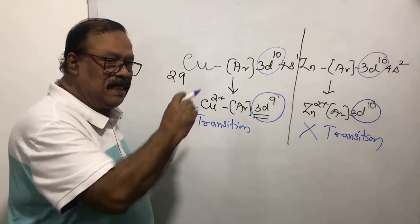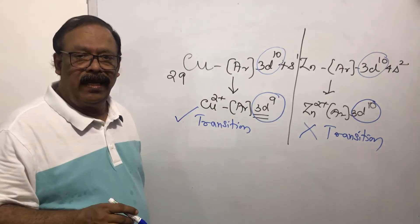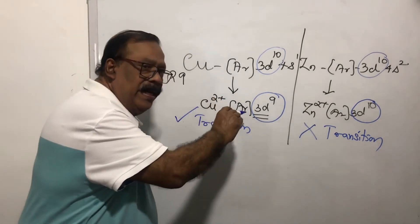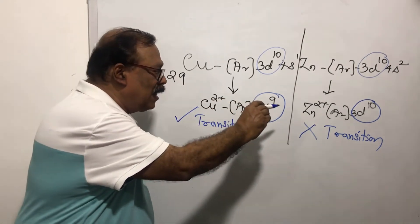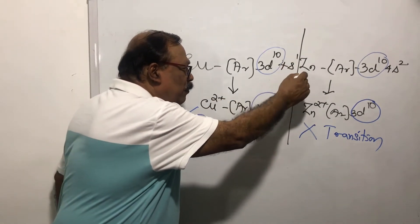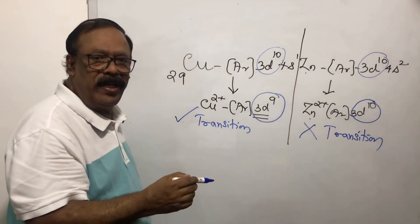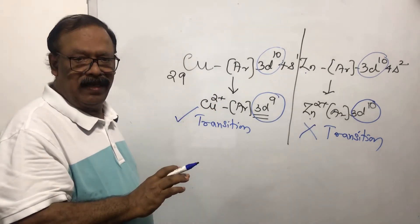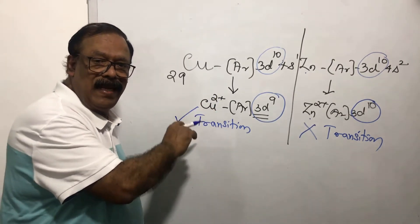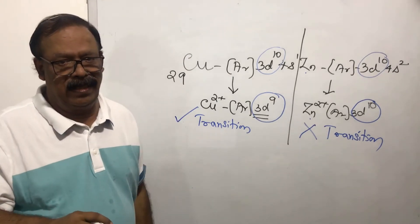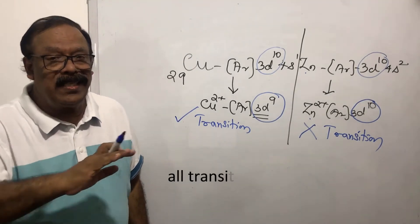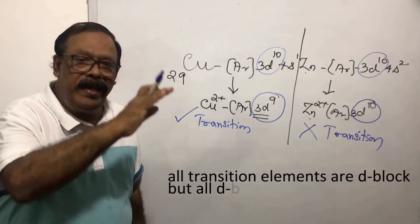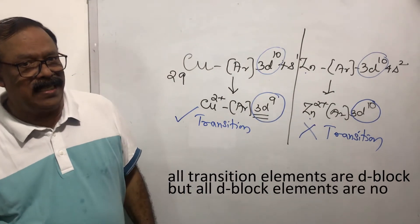Copper as well as zinc has 10 electrons in the d-orbital in their elemental state. But copper has only 9 electrons in its ion, while zinc has 10 electrons both in the elemental stage and in its ion. So by definition, zinc is not a transition element — it is only a d-block element. Copper is both a d-block element and a transition element. The conclusion is that all transition elements are d-block elements, but not all d-block elements are transition elements.